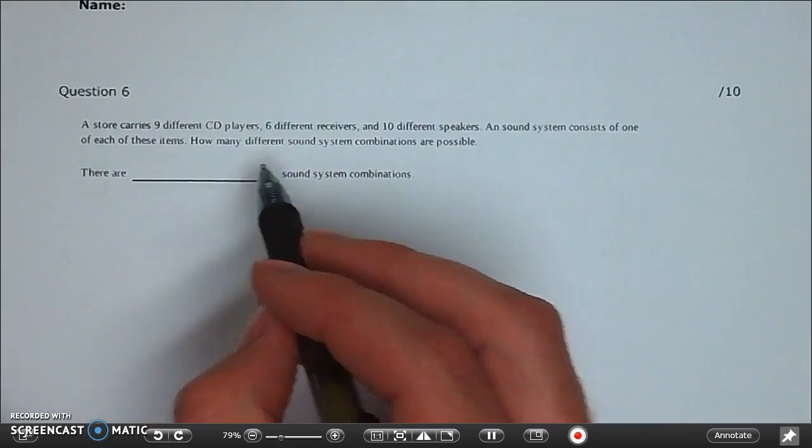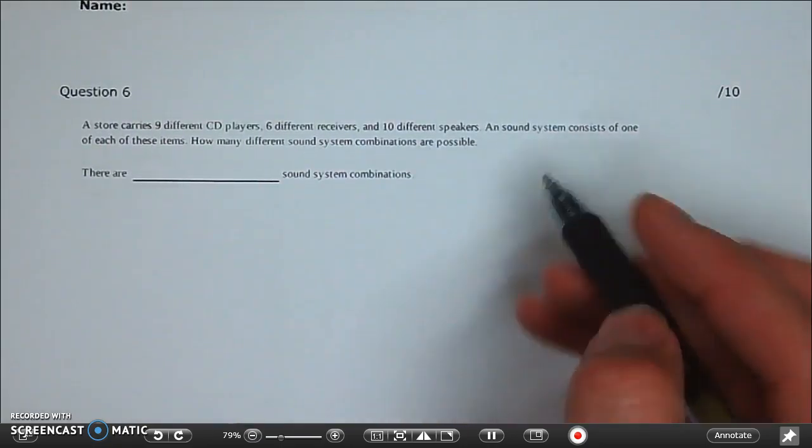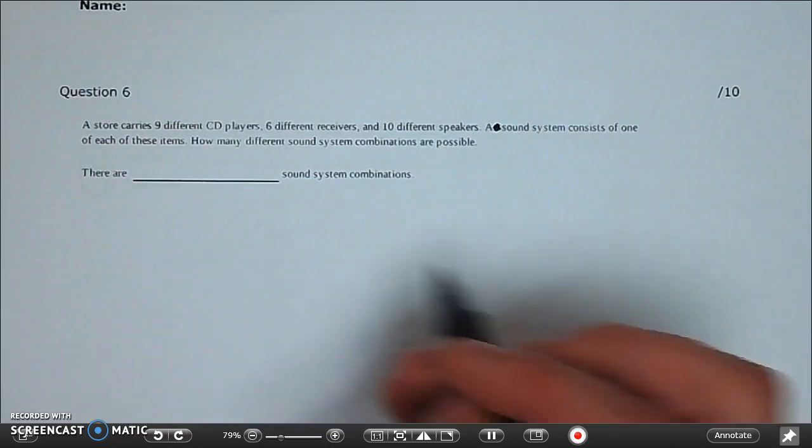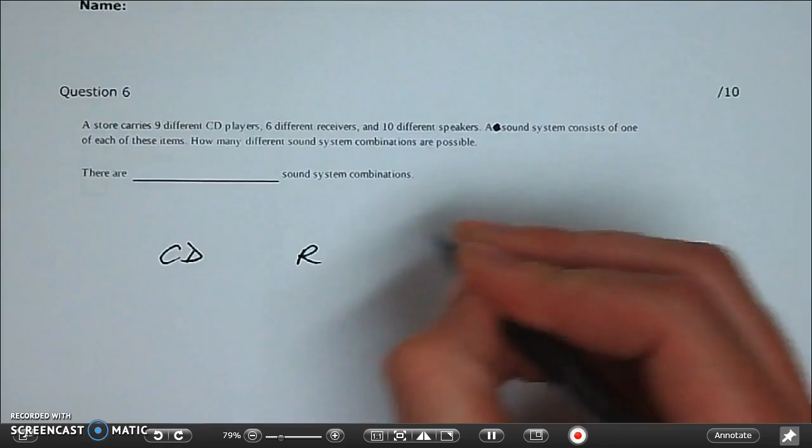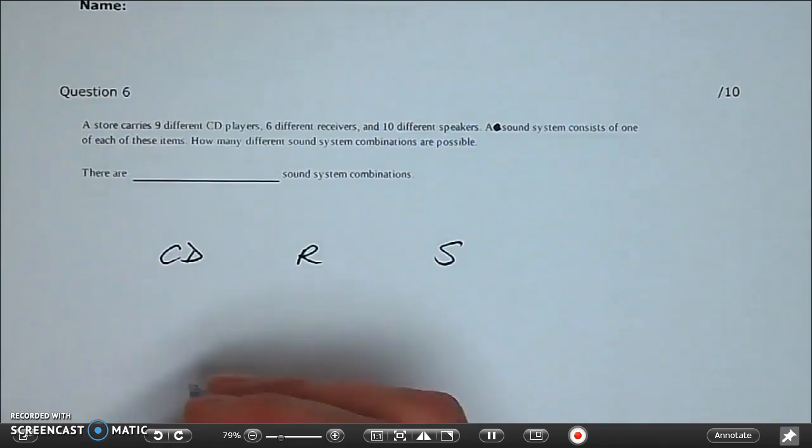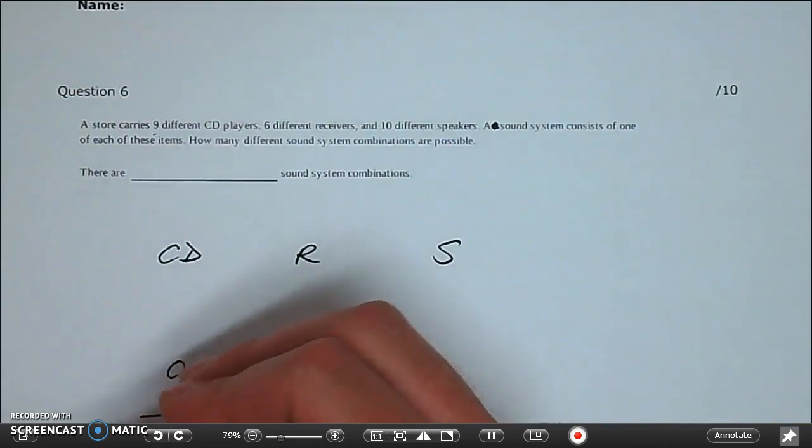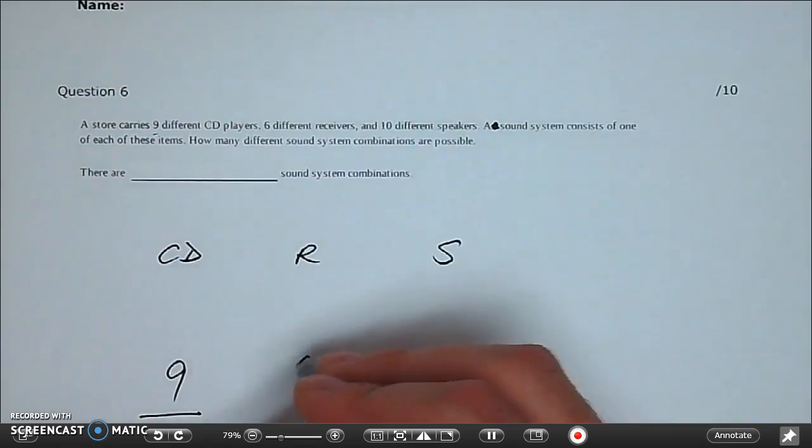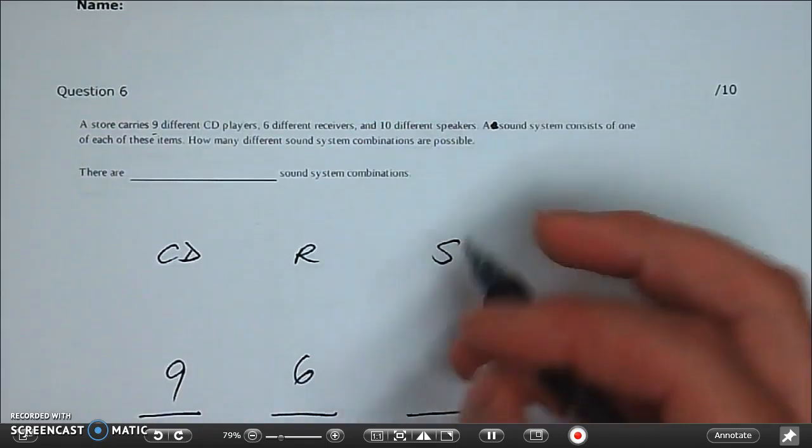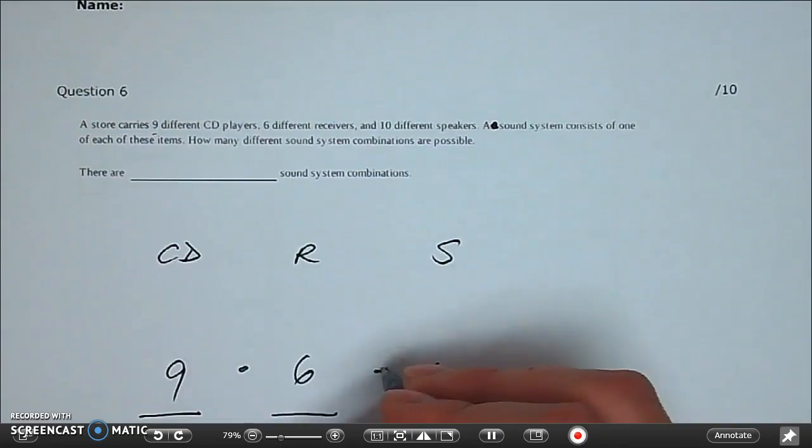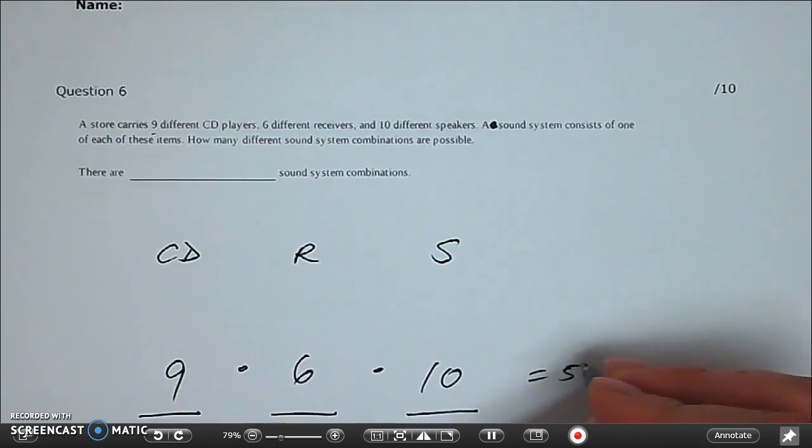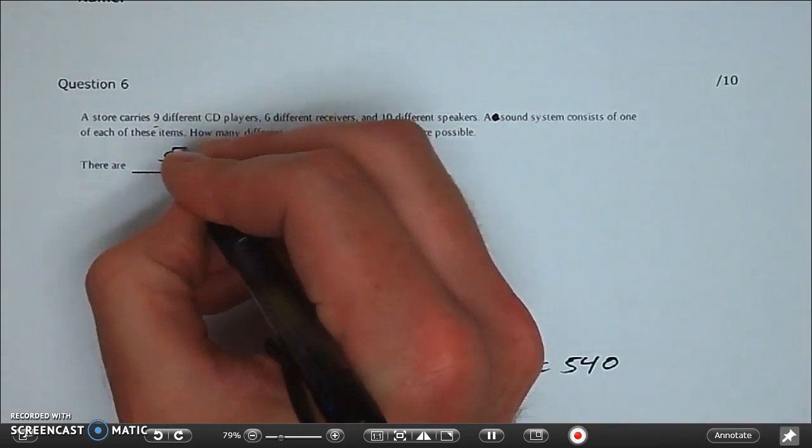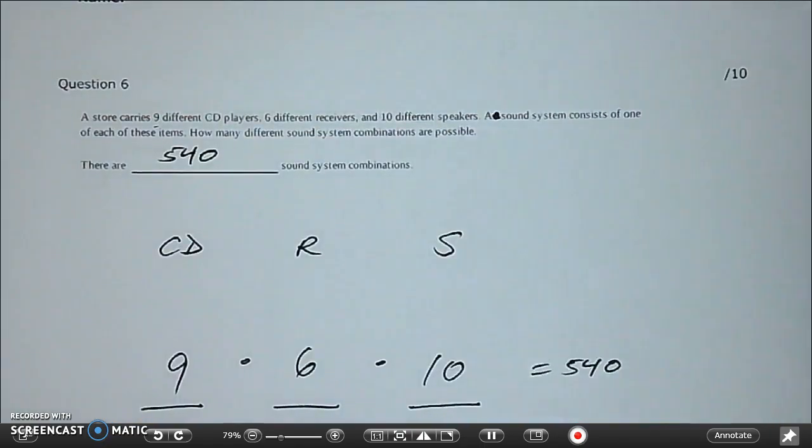Question six. The store is carrying nine different CD players, six different receivers, ten different speakers. A sound system consists of one of each of those. How many different combinations can we have? You have to have a CD player. You have to have a receiver and you have to have speakers. How many different CD players do you have? You have nine. How many different receivers? You have six options for that. And then how many different speakers? You have ten. Multiply them together. Nine times six is 54. 54 times ten is 540. Sounds like a lot but that's accurate. 540 different combinations for your sound system.